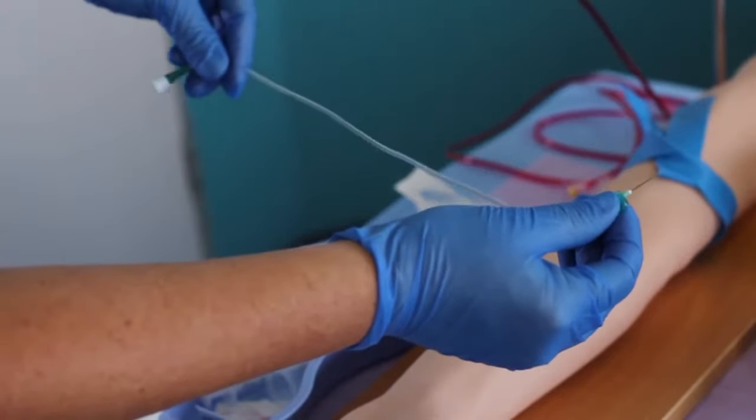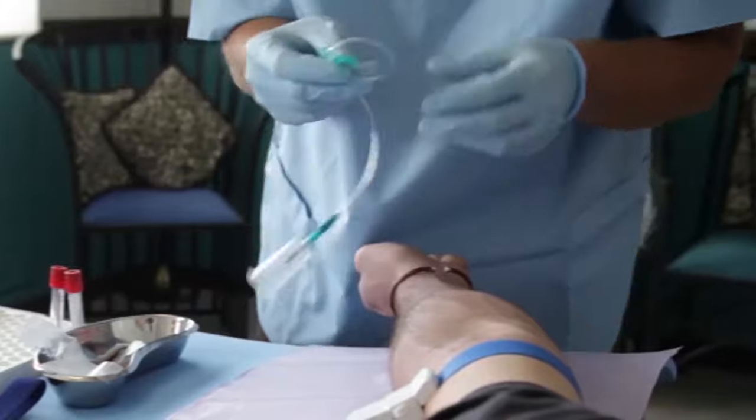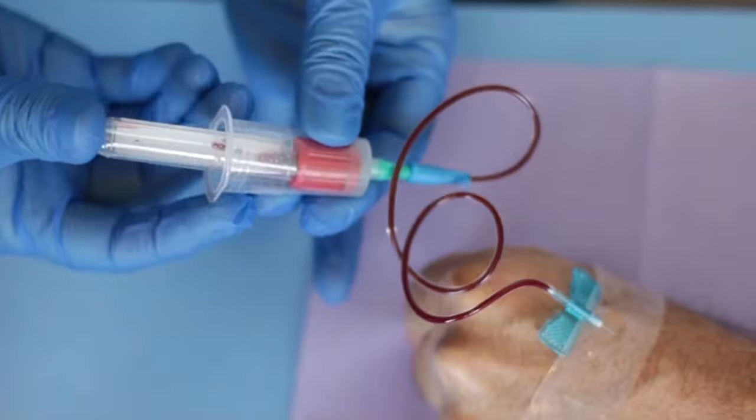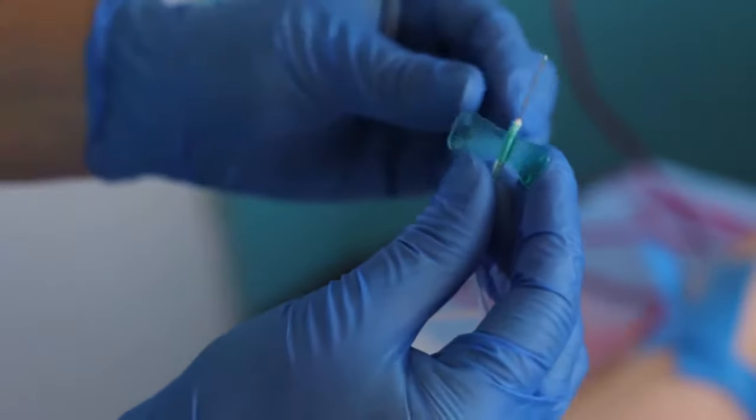Firmly attach the free end of the butterfly needle tubing either to the vacutainer hub or to the syringe. In this demonstration, the phlebotomist will use a vacutainer hub and a 21-gauge butterfly needle.